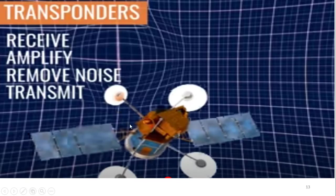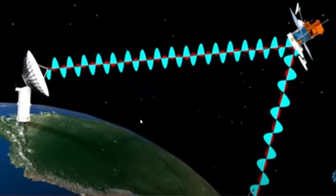After receiving the signals from the uplink frequency, the work of the transponder starts. The transponder receives the signals, amplifies them, and removes the noise acquired while traveling towards the transponder. It then transmits the signals to the parabolic reflector antennas mounted on the rooftop. This is the basis station from where the uplink signals are sent to the satellite, and then they are converted, amplified, and sent back to the parabolic reflector antenna at our rooftop through the transponder.